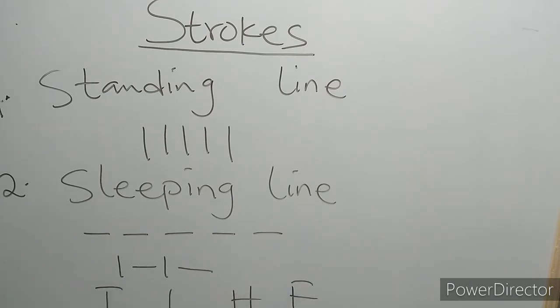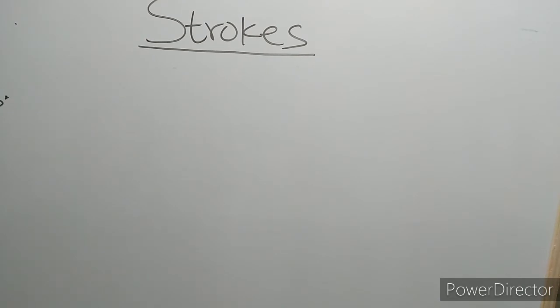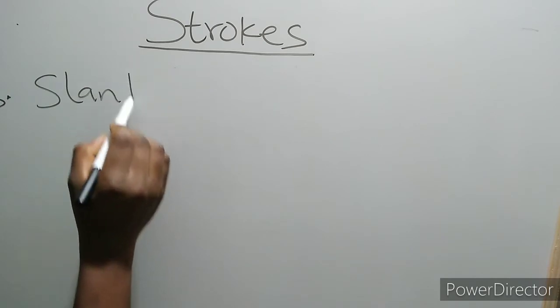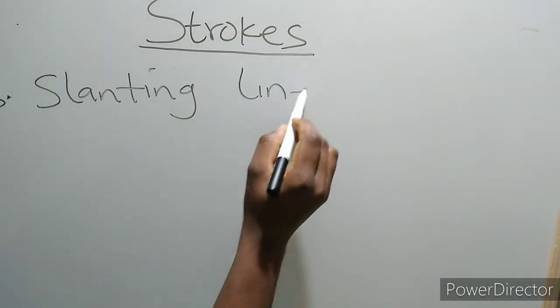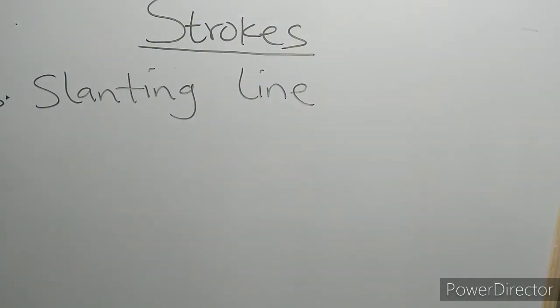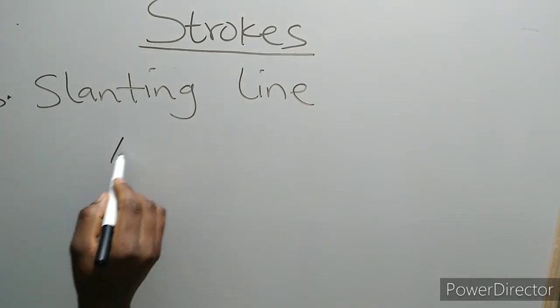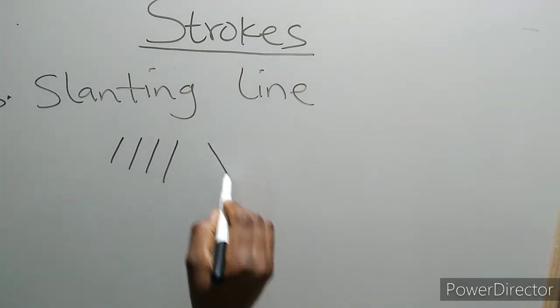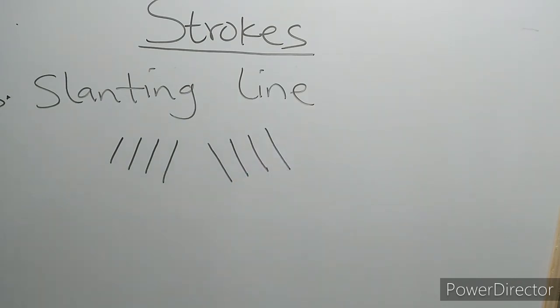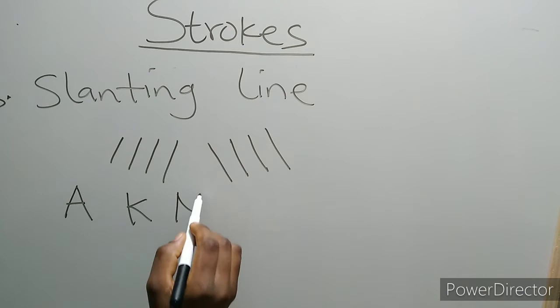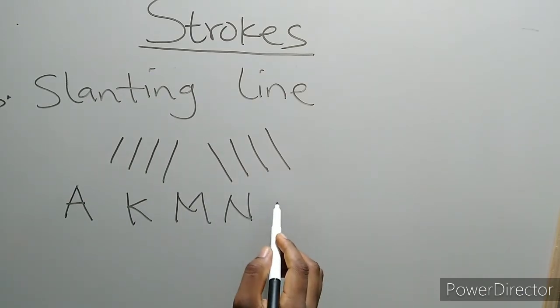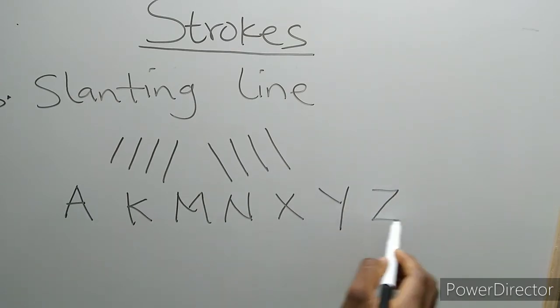So the next one we'll talk about is called the slanting line. In this slanting line, we have the left slanting line and the right slanting line. Examples of these slanting lines are we have A, we have K, we have M, we have N, we have X, we have Y, and we have Z, and so on.